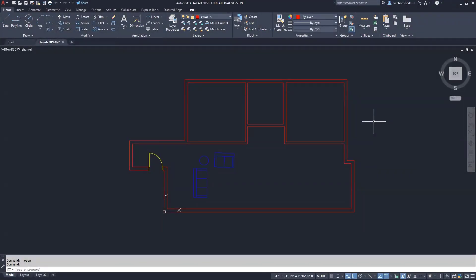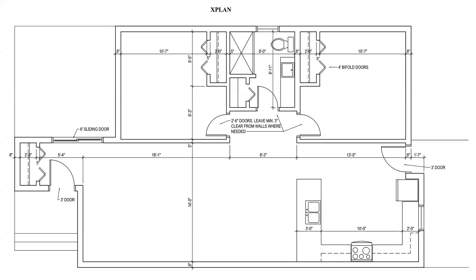We are looking at the floor plan — this is part two. In the previous recording I had said to focus on getting the walls in place first, and once you have the walls then it's a matter of getting the openings in there. Once you have the openings, go ahead and place the fixtures. What I'd like to do now is draw in the closets, put in the rod and shelf, and put in the bifold doors.